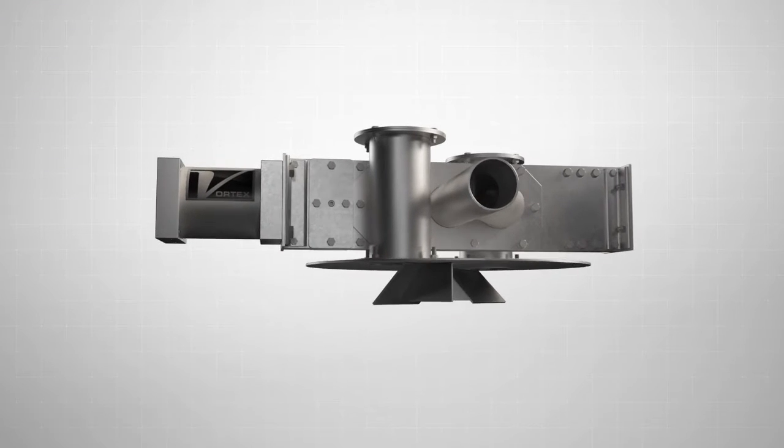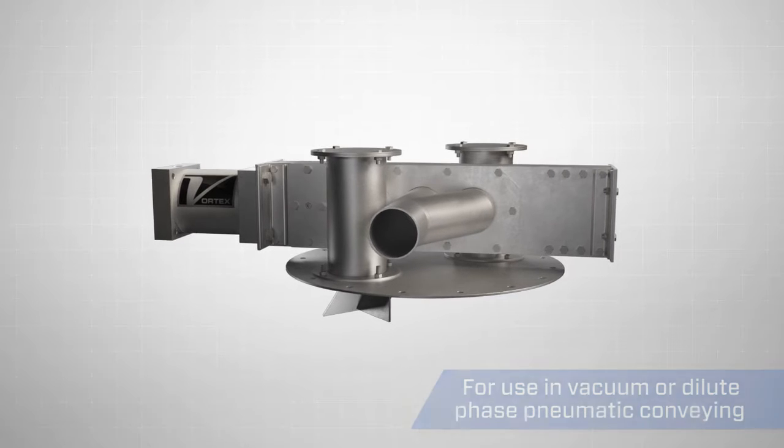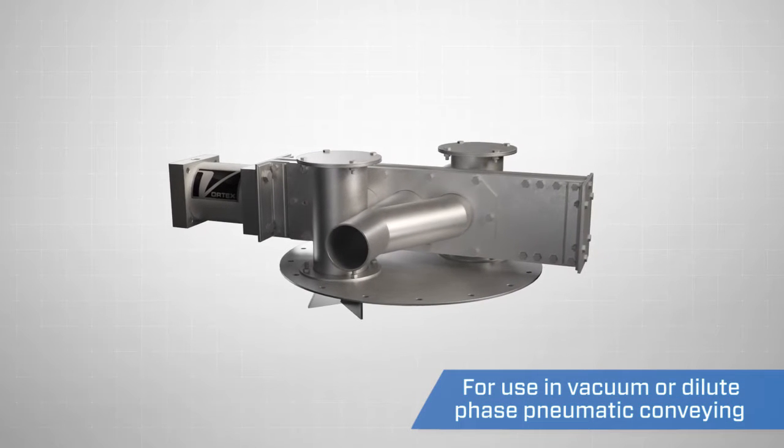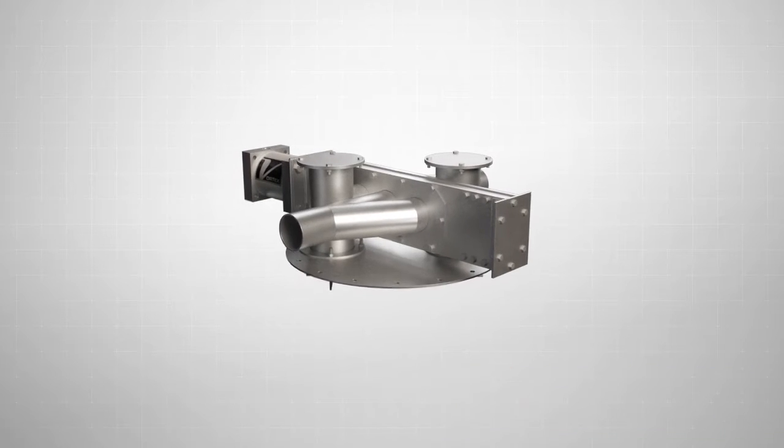The Vortex Fill Pass Diverter is specifically engineered to handle dry bulk solids in vacuum or dilute phase pneumatic conveying systems with pressures up to 15 PSIG or one bar depending on size.